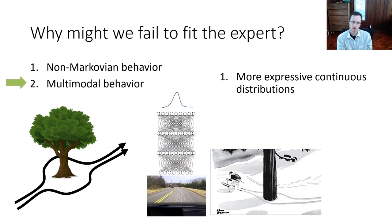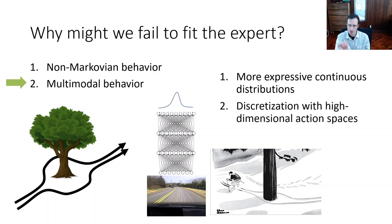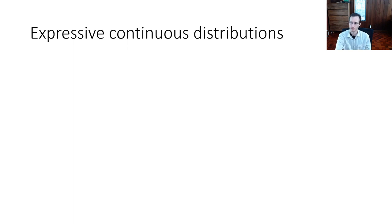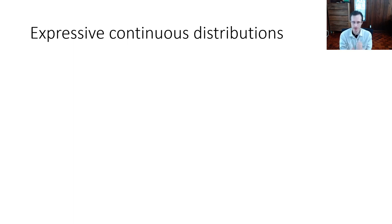How can we address this? We have a few choices. We can use more expressive continuous distributions — instead of outputting the mean and variance of a single Gaussian, we can output something more elaborate. Or we can use discretization but make it feasible in high-dimensional action spaces. Three options are: a mixture of Gaussians (simplest to implement, less powerful), latent variable models (more sophisticated), and diffusion models (which have recently become very popular and more effective). My aim here is mostly to give you survey-level coverage of the different techniques so you know the right keywords and ideas.